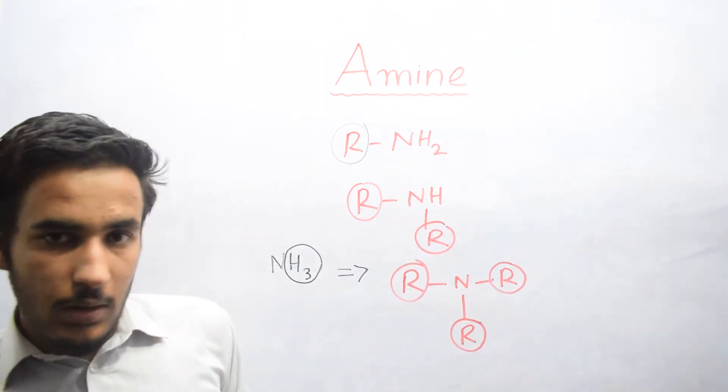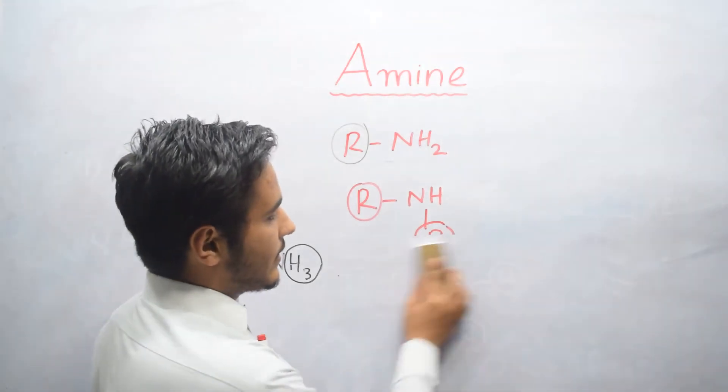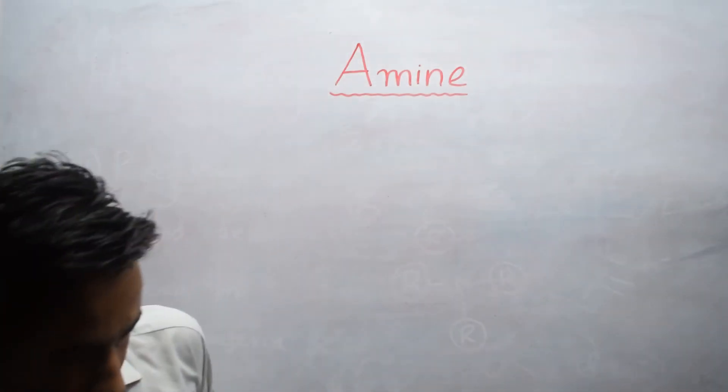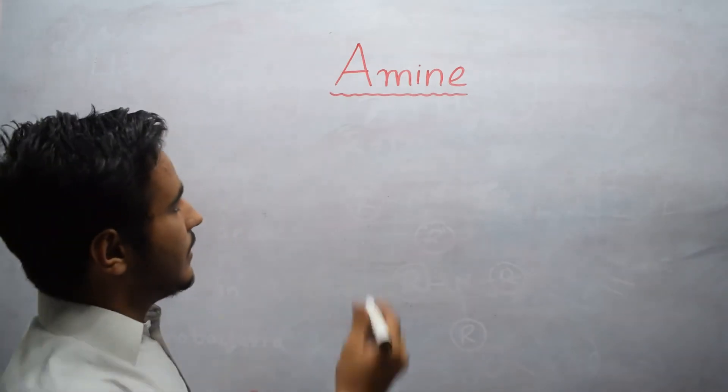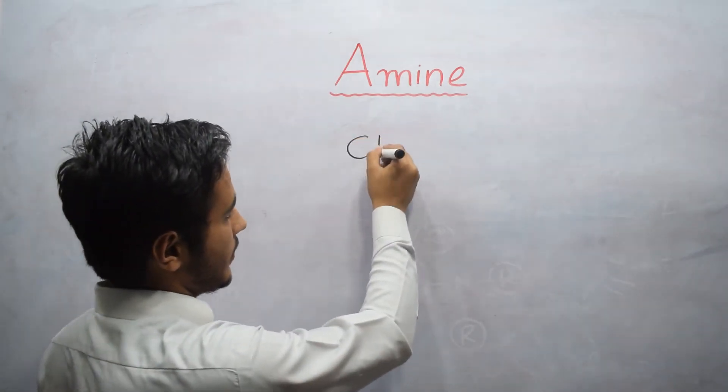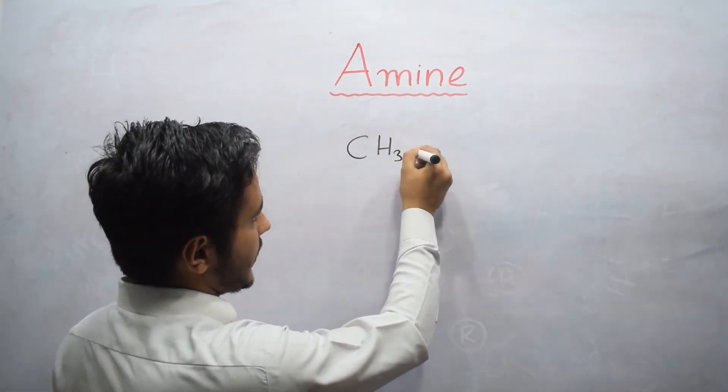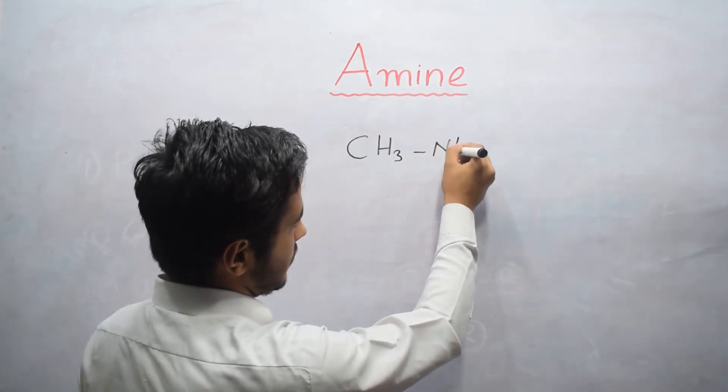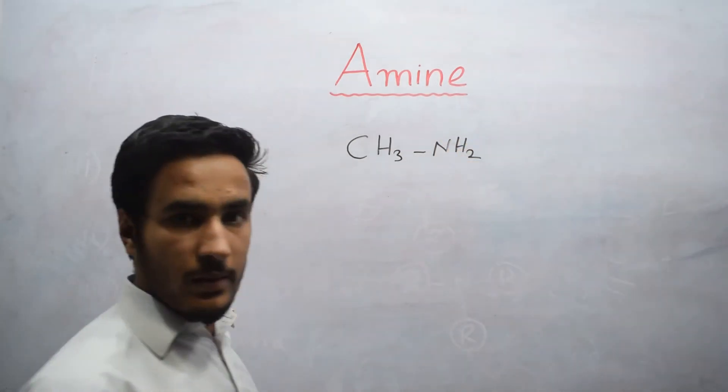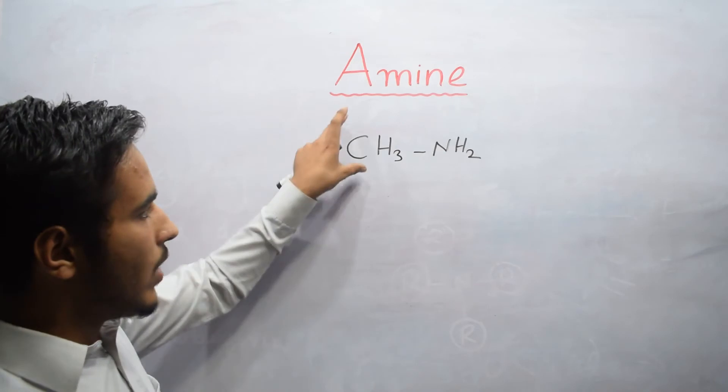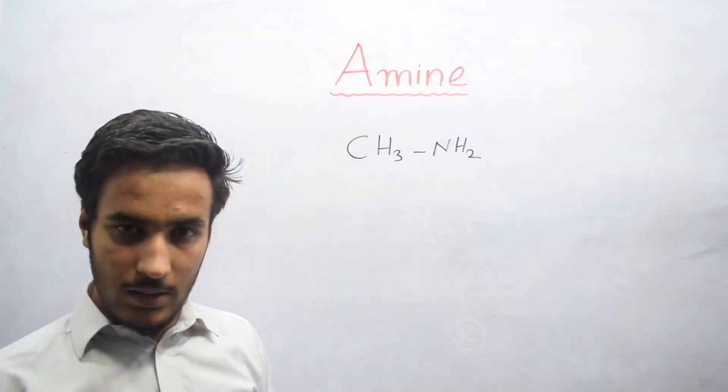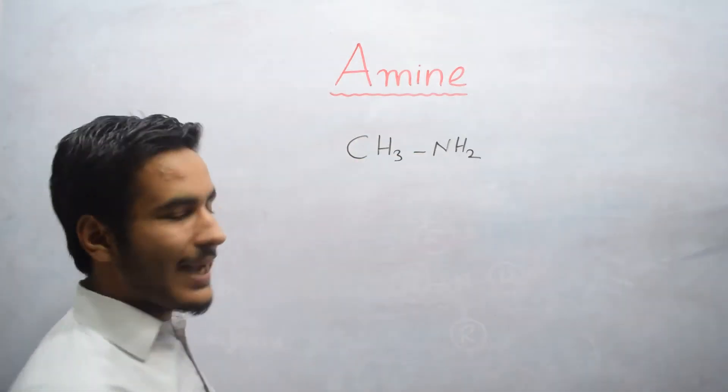Now let's look at some examples. Consider we have example CH3 bonded with NH2. So here we have one Alkyl group attached. So its name is Methyl Amine.